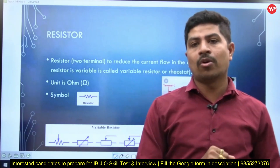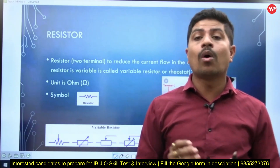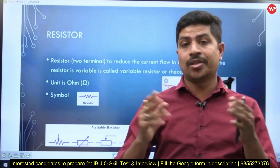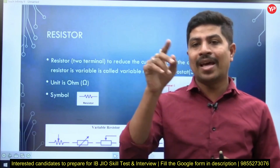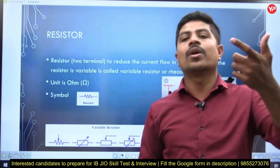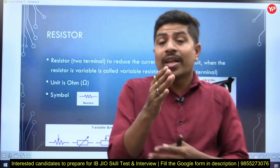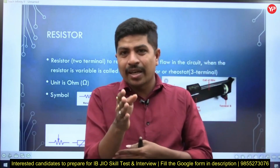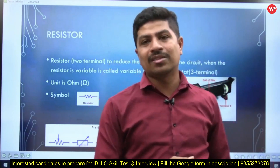Wattmeter connections are very important — how will you connect the wattmeter in a circuit? There will be four points: M, L, C, and E. You need to know which point connects where. And when you are taking the reading, there will be some error like parallax as well.